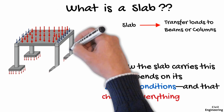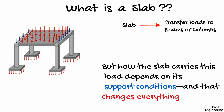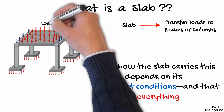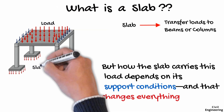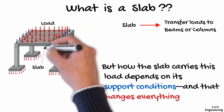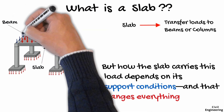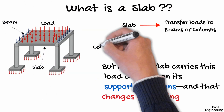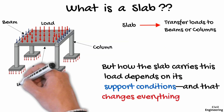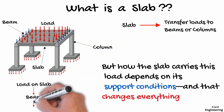When a load is applied to a slab, it is generally transferred to the beams, and from there it moves down to the columns. This is the general load transfer mechanism of the slab.